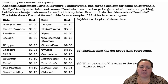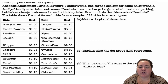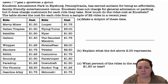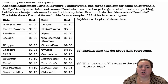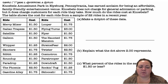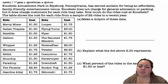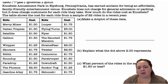An example of making and interpreting a dot plot: Nobles Amusement Park in Ellisburg, Pennsylvania has earned a claim for being an affordable family-friendly entertainment venue. Nobles does not charge for general admission or parking, but it does charge customers for each ride. How much do the rides cost at Nobles? The table shows the cost of each ride from a sample of 22 rides in a recent year. Make a dot plot of these data.